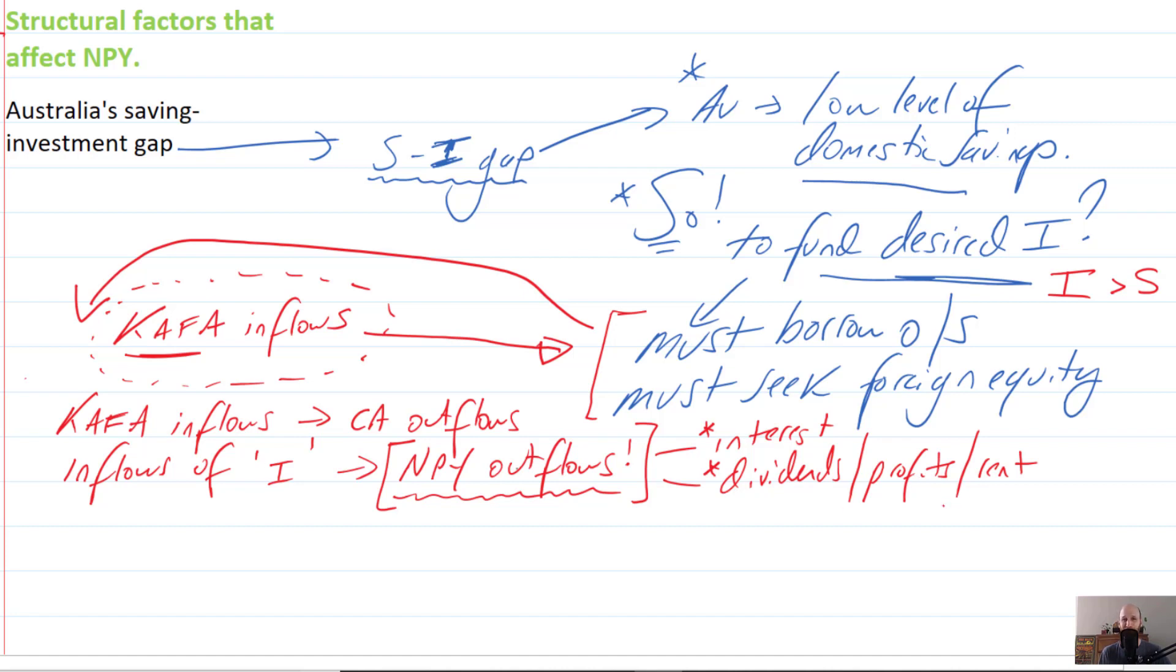So if Australia has a situation where there is a savings-investment gap, this is going to create a situation of NPY outflows.